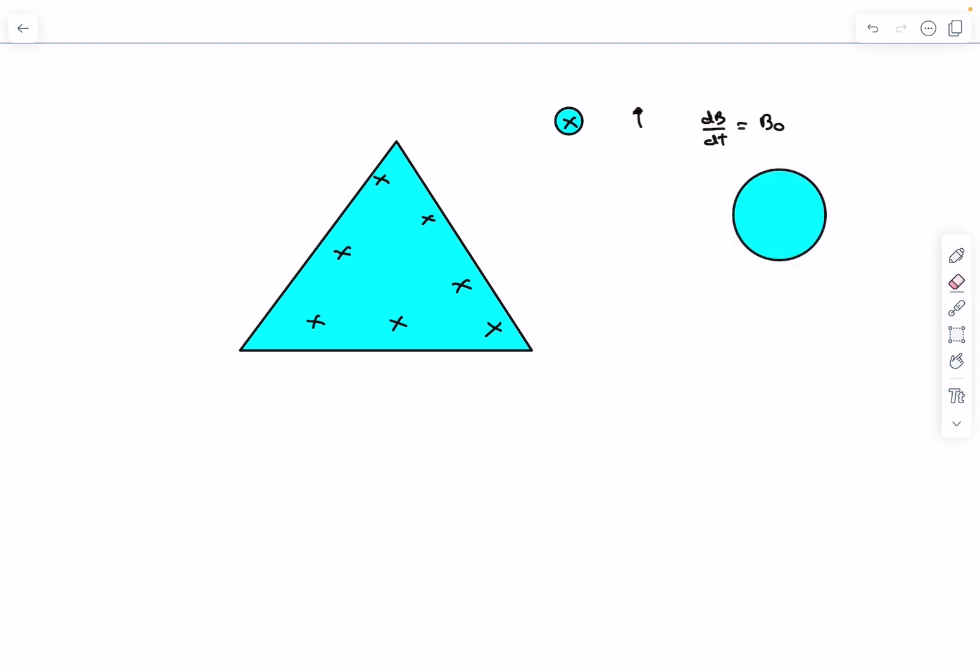So the magnetic field changing with time, electric fields will be induced in this loop. I'm going to get rid of these x marks. In this particular case the magnetic field is into the plane and it is increasing in magnitude. So the electric fields are going to be induced in the opposite sense which is something like this.